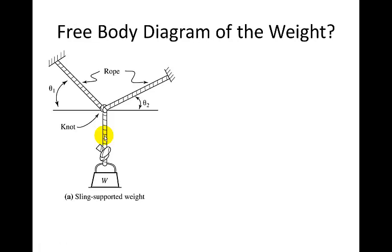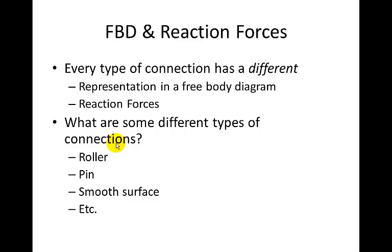We could also draw a free body diagram of the weight. So we could draw it as a box or a single point. And we would draw an arrow to represent the weight of the force acting down, and we would draw an arrow to represent the force of this rope pulling up on the weight. You can again look at that example in your book if you'd like to.